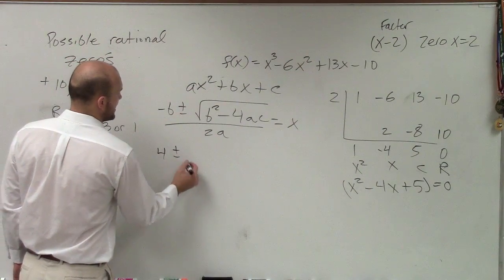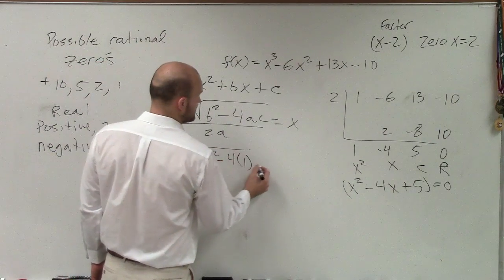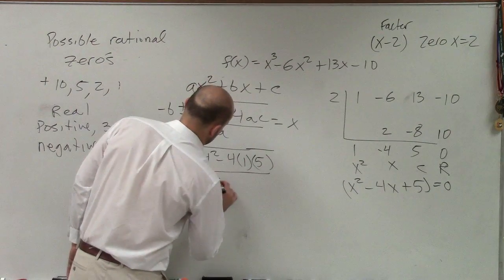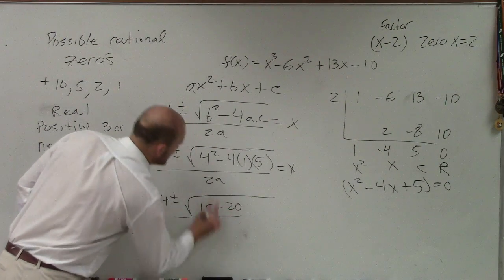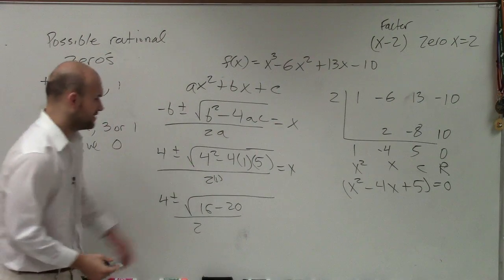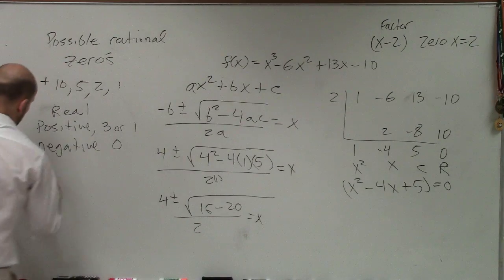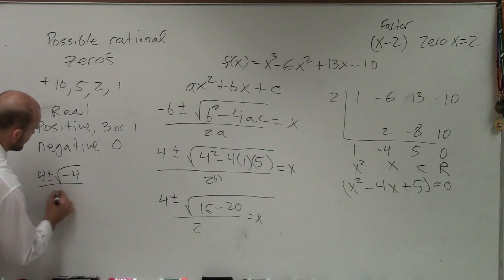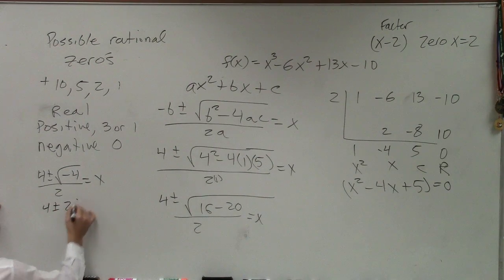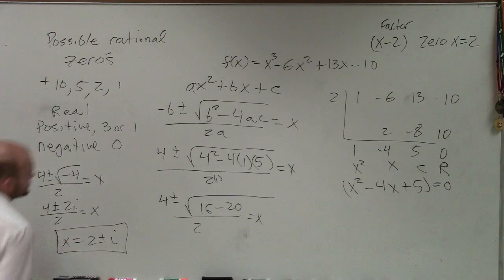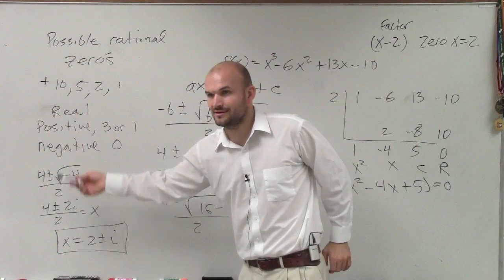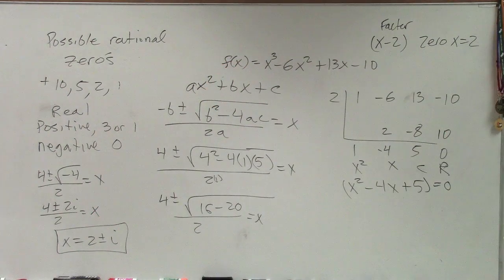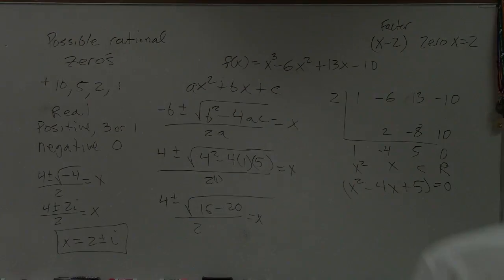Let's confirm with the quadratic formula: x equals 4 plus or minus the square root of 4 squared minus 4 times 1 times 5, all over 2. That gives us 16 minus 20 over 2, so x equals 4 plus or minus the square root of negative 4 over 2. That's 4 plus or minus 2i over 2, which simplifies to x equals 2 plus or minus i. So you have two more zeros, but they're not real — they're complex.